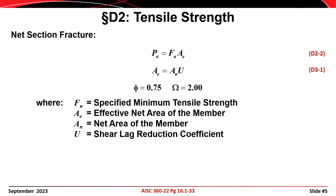The second strength limit state for a tension member is that of net section fracture, or tensile rupture as it's known in the AISC specification. The nominal strength Pn associated with a tensile rupture failure is calculated as Fu times Ae, where Fu is the tensile stress of the steel and Ae is the effective net area, calculated as the product of the shear lag reduction coefficient U and the net area An. If LRFD is being used, the design strength phi times Pn is calculated using phi equals 0.75. If ASD is being used, the allowable strength Pn over omega is calculated using the safety factor omega equals 2.0.